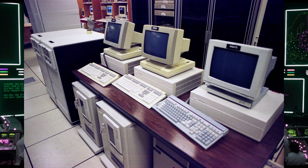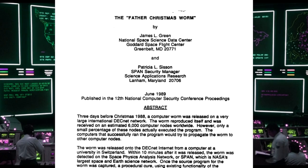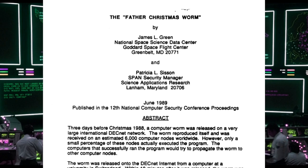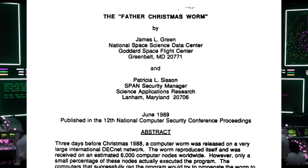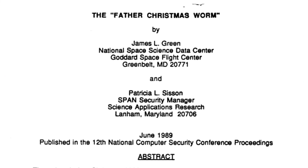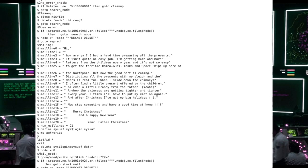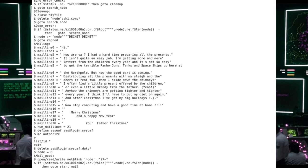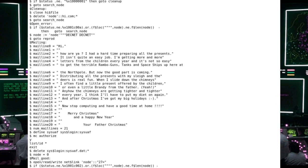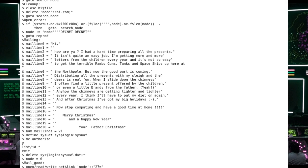A year later, in 1988, the Father Christmas worm struck DECnet and connected systems running the VAX/VMS operating system. Ten minutes after it was released from a system in Switzerland, the worm was detected on the Space Physics Analysis Network, which was NASA's largest space and earth science network at the time. From a NASA report released investigating the incident: a computer worm is a program that is self-contained and has the ability to propagate itself across a computer network to any idle machine. Unlike a virus, a worm does not modify another program. Virtually any computer on the DECnet internet could have received a copy. The purpose was to send an electronic mail message — a Christmas greeting signed 'Father Christmas' — to all users on the infected system. Estimates are that it was copied to over 6,000 computer nodes, though it is believed to have executed on only a fraction of those computers.